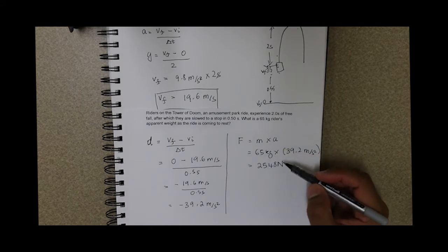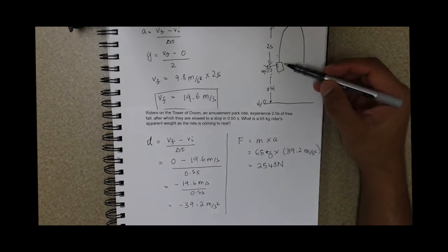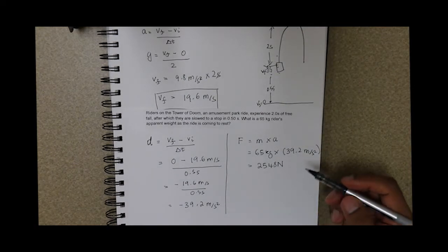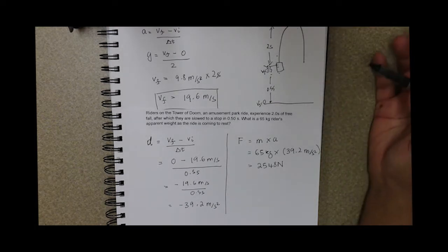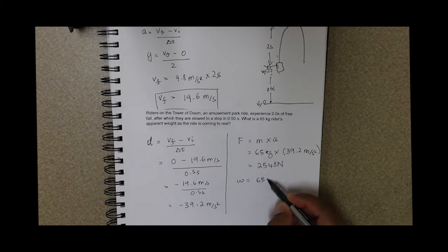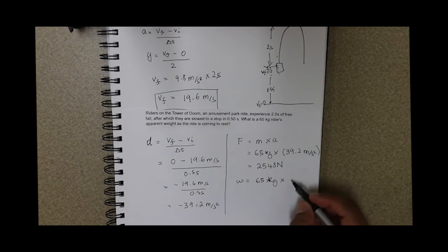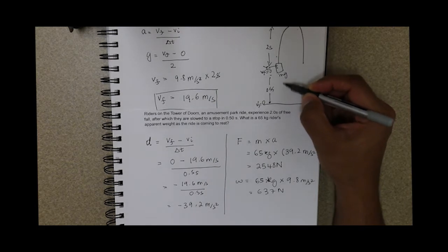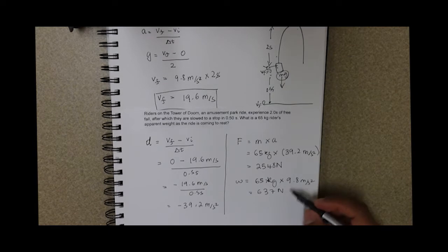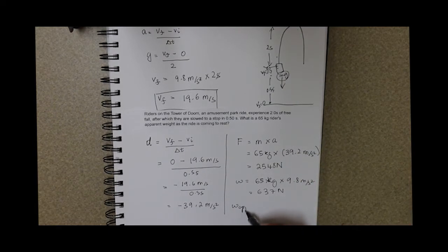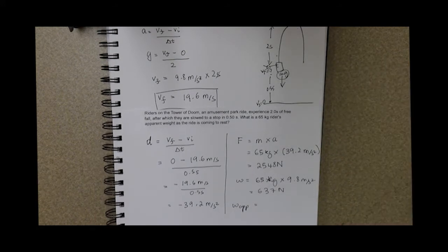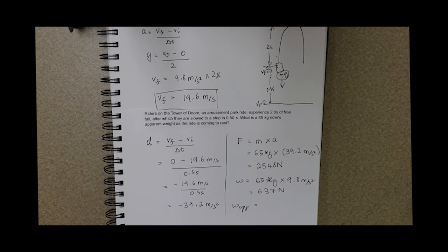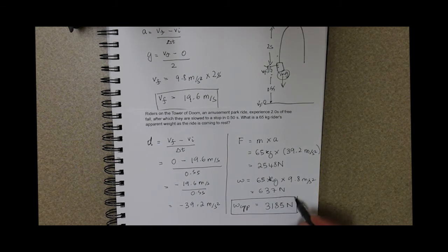We are asked to find the rider's apparent weight as they come to a halt. The deceleration force is 2548 newtons, but this needs to be added to the rider's actual weight, which is mass times g: 65 kilograms times 9.8 equals 637 newtons. Adding these together: 637 plus 2548 gives us 3185 newtons, which is the rider's apparent weight as they come to a stop in the amusement park ride.